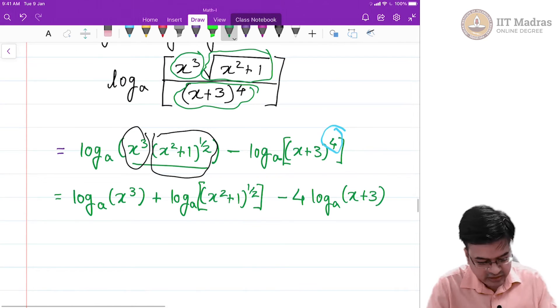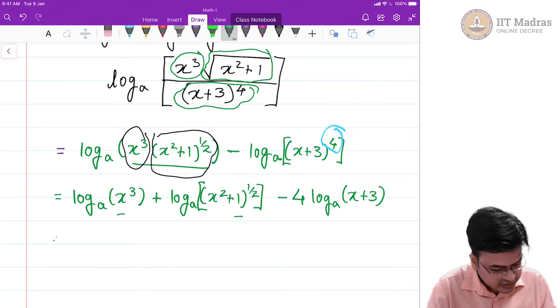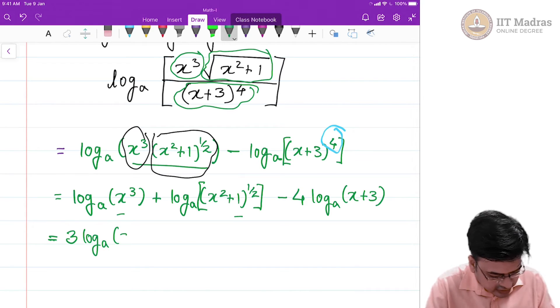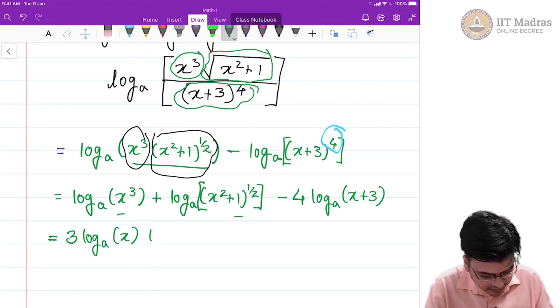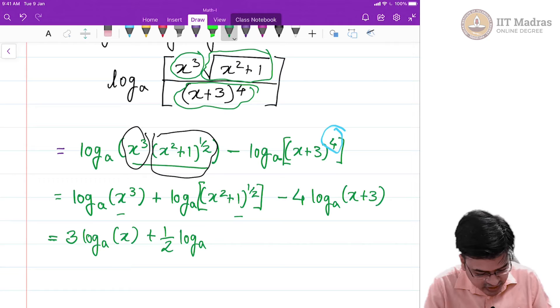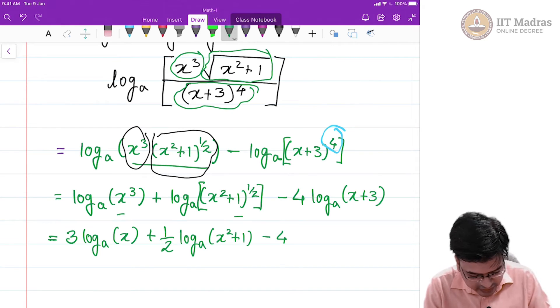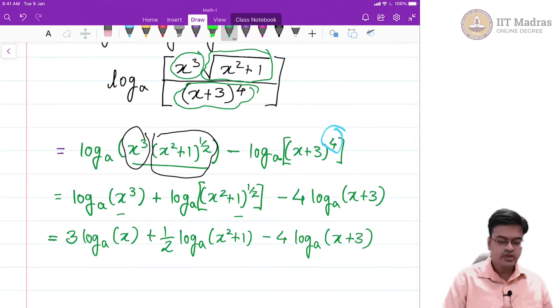Let us go ahead and do a similar thing for the other 2 terms that are listed here, then we will get the final answer that is 3 times log to the base a of x plus half times, here I am using it for rational numbers which I have not proved, x square plus 1 minus 4 times log to the base a of x plus 3.